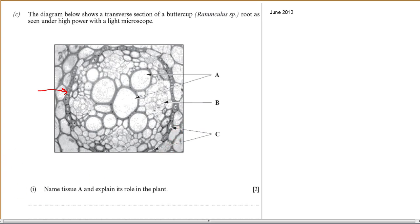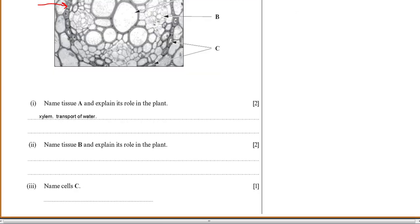The first question: name tissue A and explain its role in the plant. A is the xylem, and its role is the transport of water. Part two: name tissue B and explain its role. Tissue B is the phloem, and that's for translocation, or the transport of sucrose. Part three: name cells C. They're the endodermal cells, or the endodermis.